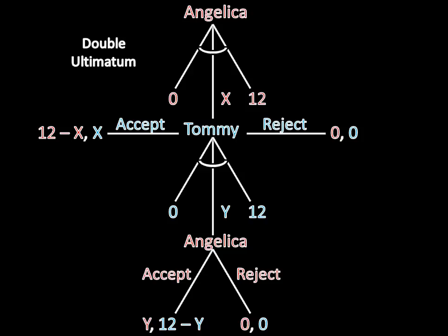Thus, there are a bunch of different ways that this game can play out. In equilibrium, Angelica can make any offer less than 12. If it is 11, Tommy can accept it or make a counteroffer of Y equals 1, which Angelica will accept. These are both valid because they have the same conclusive payoffs.